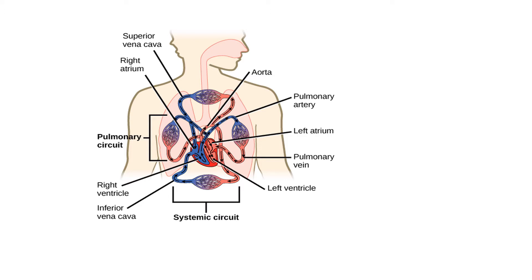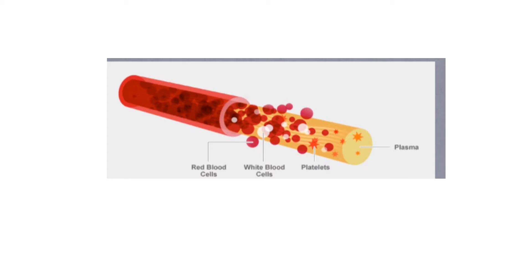The main parts of the circulatory system are blood, blood vessels, and the heart. Blood consists of red blood cells, white blood cells, and platelets. Blood vessels are arteries, capillaries, and veins. The heart is made up of cardiac muscles.